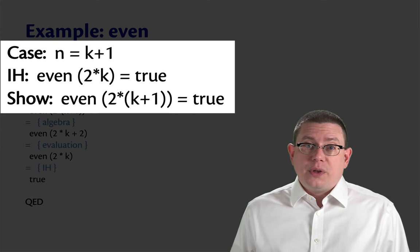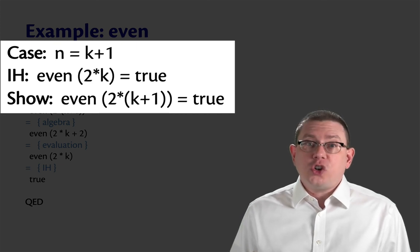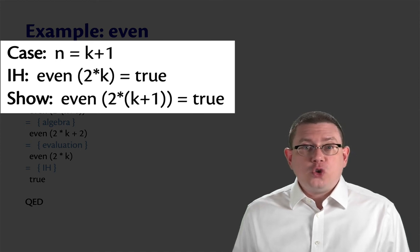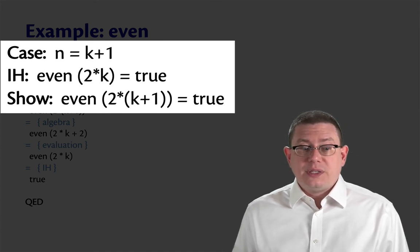And I want to show the property P on the larger number, which is K plus 1. So I want to show that even of 2 times K plus 1 is equal to true.